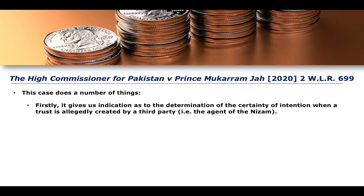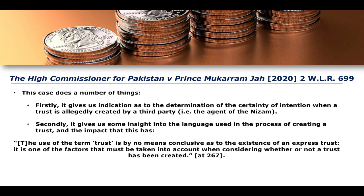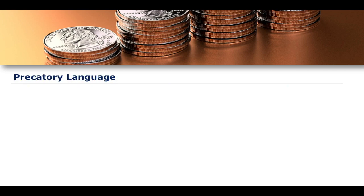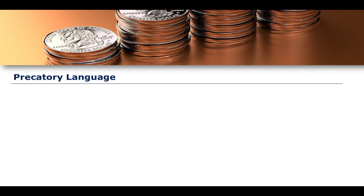It was held that no express trust would arise since the original transfer of the property was done by an agent of the Nizam who did not have the authority to create a trust. Firstly, this gives us an indication as to the determination of certainty of intention where a trust is alleged to be created by a third party. Secondly, it gives insight into the language used in creating a trust: the use of the term 'trust' is by no means conclusive as to the existence of an express trust — it is one factor to be taken into account. Just because a document says 'trust' doesn't mean anything if other factors, such as lack of authority to create a trust, are present.